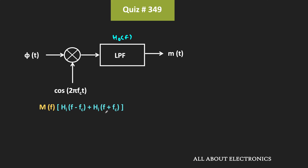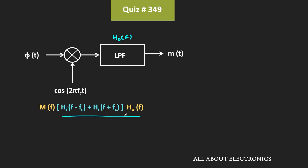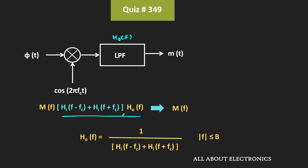Once this signal is passed through the low pass filter, in the frequency response it will get multiplied with H. So if we want to recover the message signal, this term should be equal to 1, so that at the receiver we can recover the message signal. That means the frequency response of H should be equal to 1 divided by this term. If B is the bandwidth of the message signal, then after the low pass filter in the range of plus/minus B, we should get a flat response.